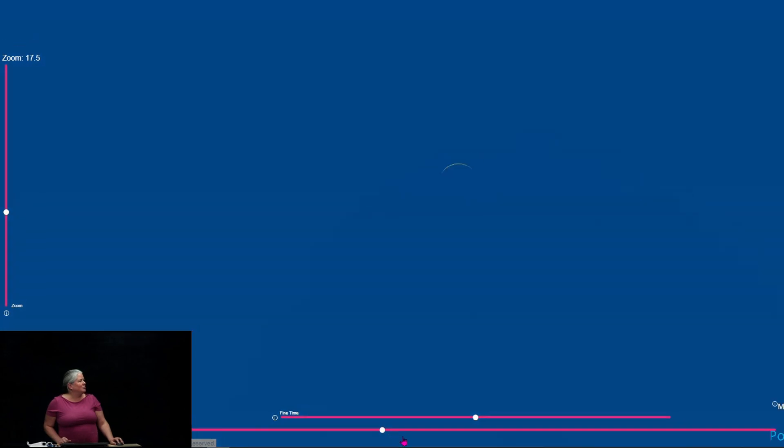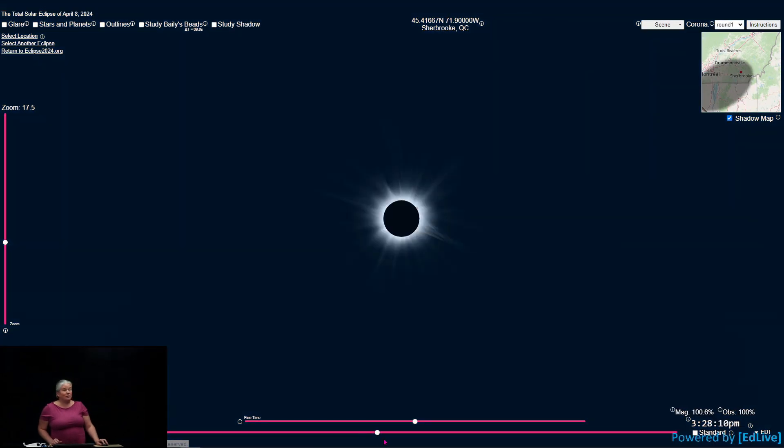As long as there is a part of the Sun visible, you need to have your glasses on. So partial eclipse, glasses on. In Sherbrooke, when we reach the eclipse maximum, it will be the total eclipse, or what we call totality. And this is the amazing show.